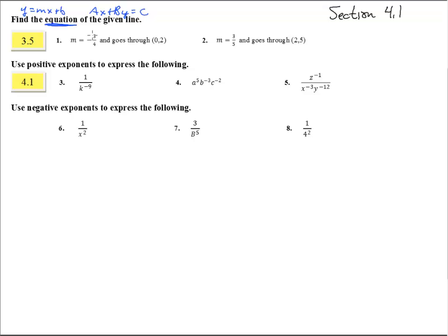Here we have the slope that we are given, and 0, 2 — we're given the y-intercept, so I'm going to write that in slope-intercept form: y equals negative three-fourths x plus 2. And we're all done. That will describe all the points on the line that has that slope but goes through that one particular point.